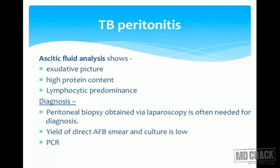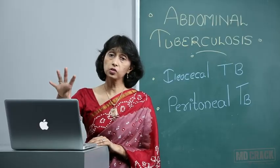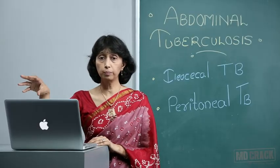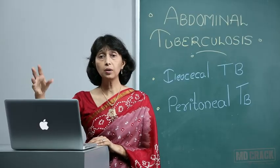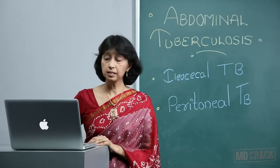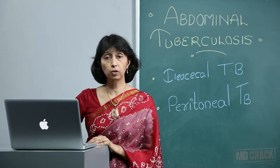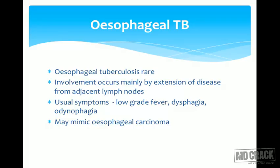In tuberculous peritonitis, lymphocytes far outnumber polymorphs in the ascitic fluid. Diagnosis can be further enhanced by peritoneal biopsy via laparoscopy, and AFB cultures can be performed, though the yield is often low. We rely mainly on the ascitic fluid report. Nowadays, PCR testing is available for fluids and tissues.